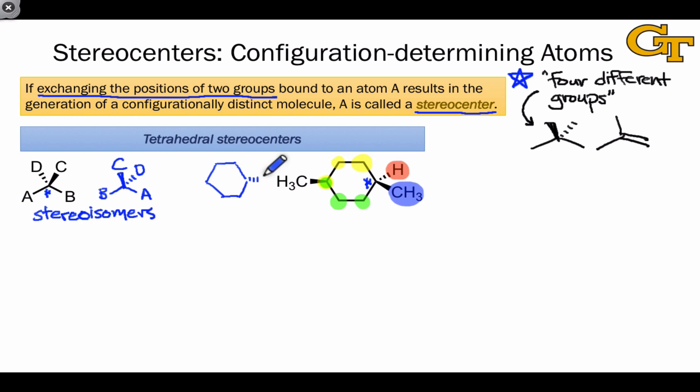When we do this, we end up with a stereoisomer of the original molecule. And the most straightforward way to see this is to consider cis-trans isomerism in this cyclohexane ring system. The molecule on the left is trans, while the molecule on the right is the corresponding cis isomer.